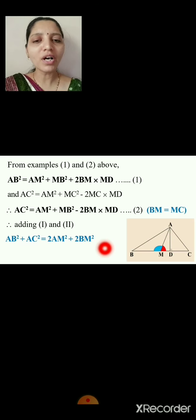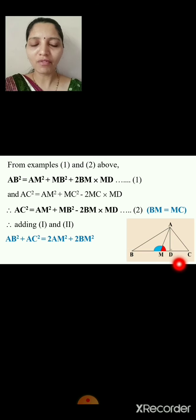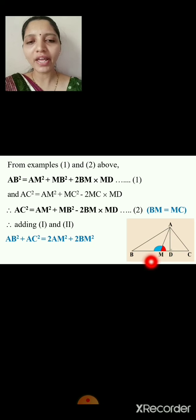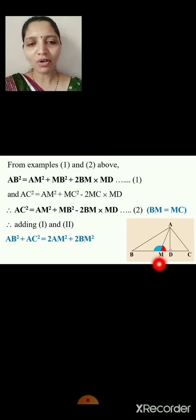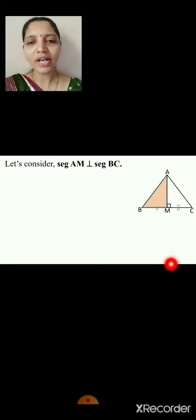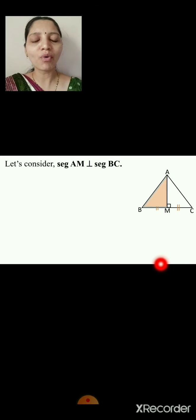Now there are different cases. Here AM is the median. Now let's consider the special case where segment AM is perpendicular to BC — that is, AM ⊥ BC. We will see how Apollonius theorem holds in triangle AMB and triangle AMC.